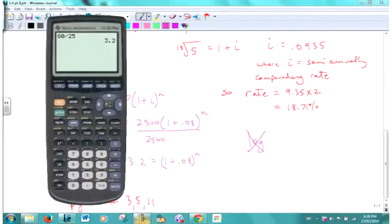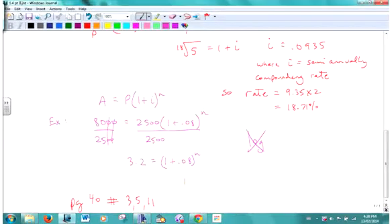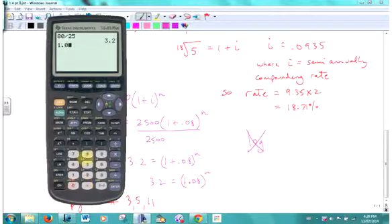1.08, I can join those to the power of n, is 3.2. Well, you got to play around with it. Like I said, trial and error. Let's try 5 years. Nope, that's not 3.2, it needs to be a lot bigger than that. Let's try 10 years. Still needs to be bigger, so you just keep going until you find the closest time period.